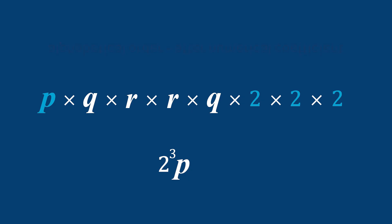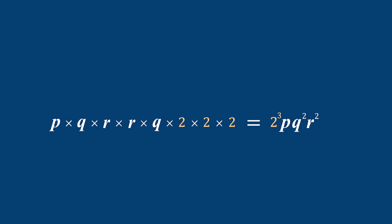Next, the base q appears two times, so we write q to the power of two. And then the base r appears two times, so we write r to the power of two. In exponential form, we write this as 2 to the power of three times p times q to the power of two times r to the power of two.